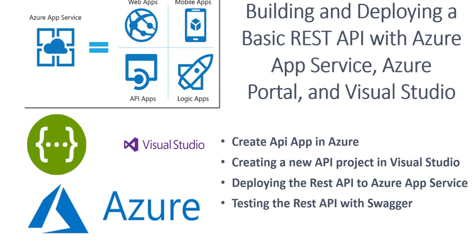In this demo, we are going to create an API app using the Azure portal, then create a REST API project inside Visual Studio, deploy from Visual Studio to Azure, and see how we can use that with Swagger. Let's start.